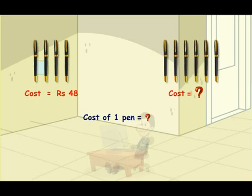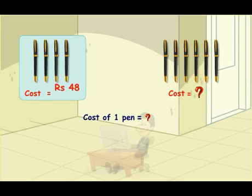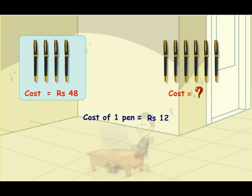The cost of 4 pens is Rs.48. So how do we find the cost of 1 pen? Of course, we divide. So 48 divided by 4 is 12, and this tells us that the cost of 1 pen is Rs.12.